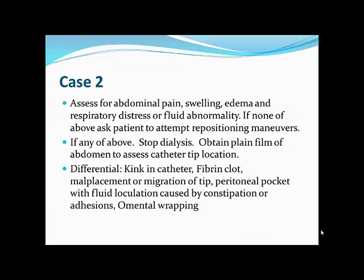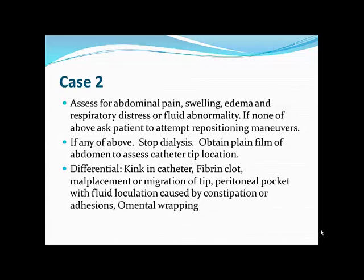Common catheter-related causes of drainage failure include: catheter kinks, fibrin clots, migration or malplacement of the catheter tip — including the tip landing in a peritoneal pocket, particularly with prior surgical adhesions or constipation — and omental wrapping. An X-ray example shows a coiled catheter tip migrated up under the diaphragm instead of sitting in the pelvis where it should be — catheter migration causing poor flow.